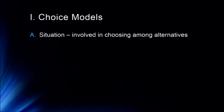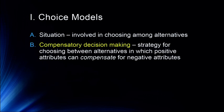The first area of decision-making we'll talk about is choice models. These are situations involving choosing amongst competing alternatives. Which college do I want to go to? What car do I want to buy? What do I want to pick off the menu? These are choice alternatives. We tend to have two different kinds of decision-making strategies for choice situations.